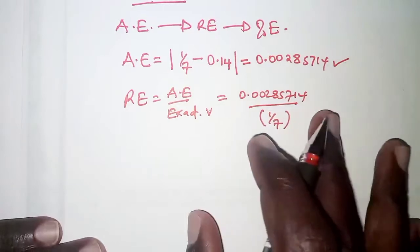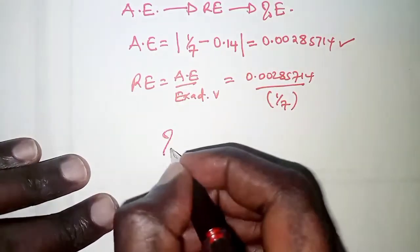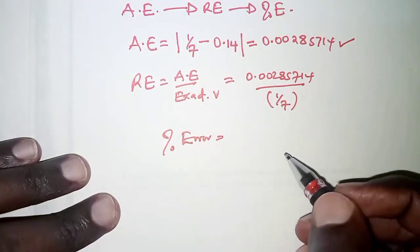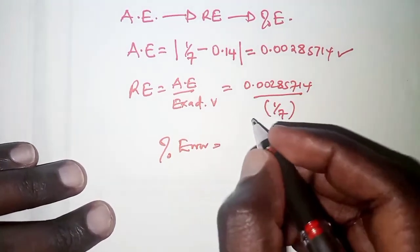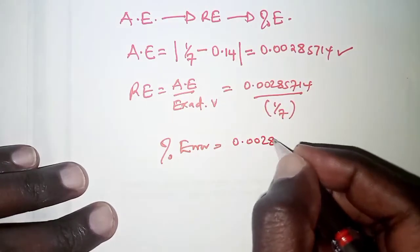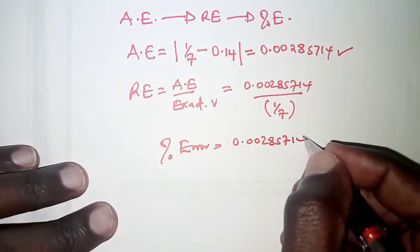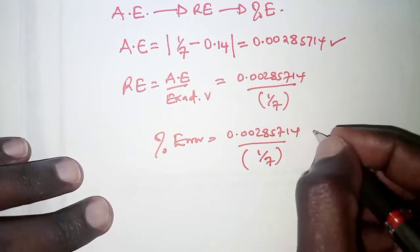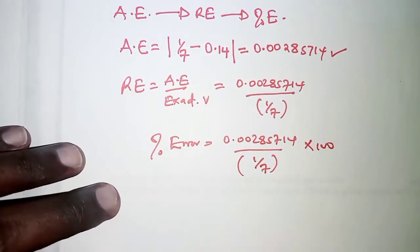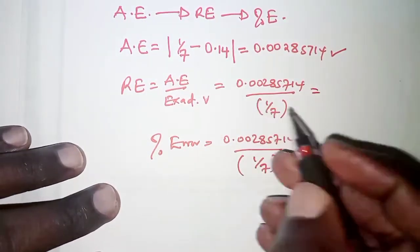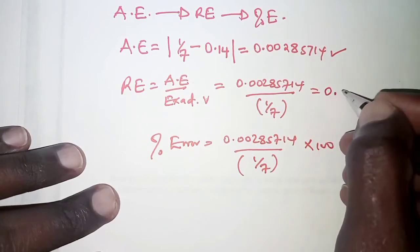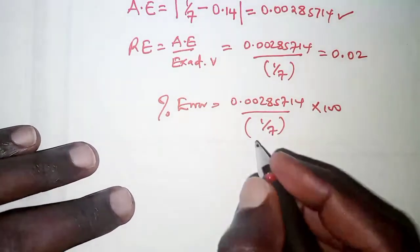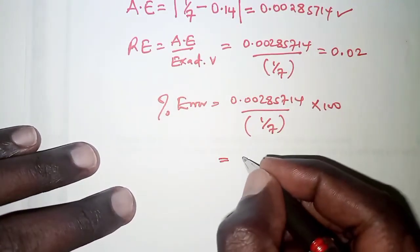And from here, we can now get the percentage error which is just simple. We have 0.00285714 all over 1 over 7, and then you multiply by 100. If you work out this part, you should be getting 0.02. And therefore, when you multiply from my calculator, I am able to get 2%.